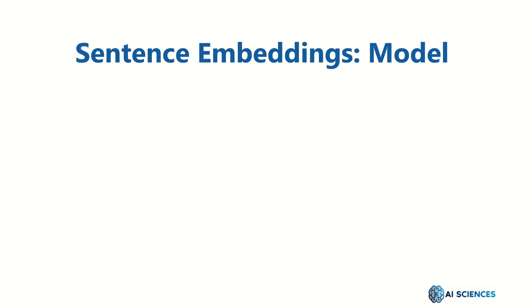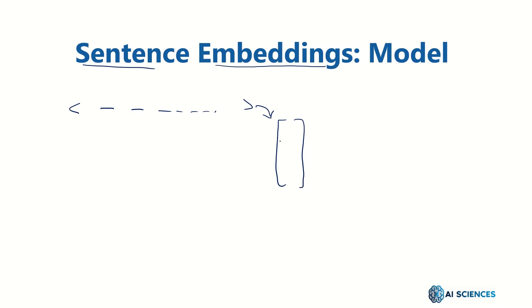There are also sentence-level embeddings used for text classification. Regardless of the length of the input sentence, you generate an embedding for the whole sentence. So for sentence one, that's the whole embedding, which itself may use word embeddings.